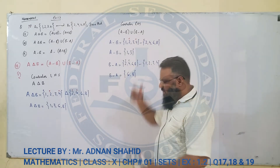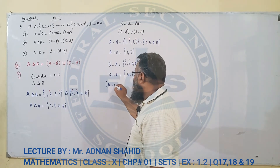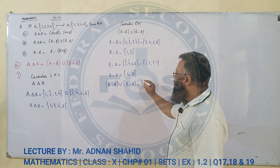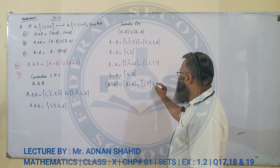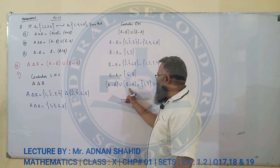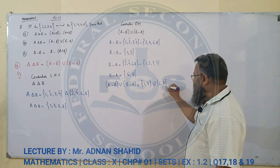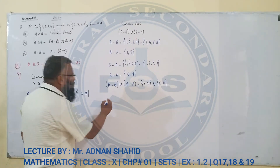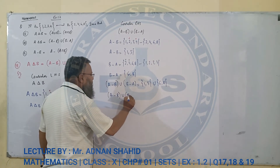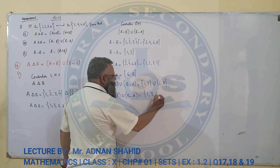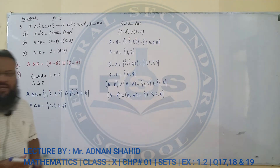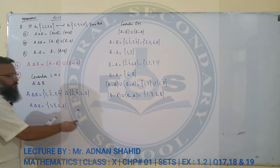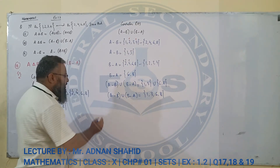अब A minus B union B minus A = {1, 3} union {6, 8}. Union में दोनों को मिलाकर तरतीब से लिखते हैं। A minus B union B minus A = {1, 3, 6, 8}. ये right hand side solve हो गई। अब देखते हैं LHS और RHS का जवाब same है — LHS: {1, 3, 6, 8} और RHS: {1, 3, 6, 8}. दोनों बराबर हैं।